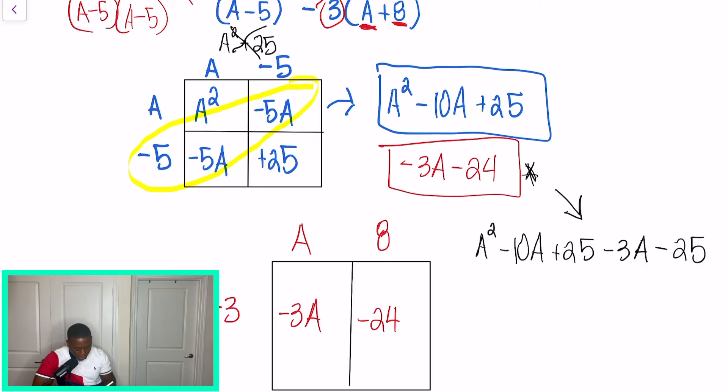So a squared, no like term, it stays the same. Now we're going to go through and we're going to add negative 10a and negative 3a. Once we do that, we'll have minus 13a, and then made a mistake. That last number should be 24. Now in our last step, we're going to look and we're going to do positive 25, and we're going to subtract 24 from it. So our final answer should be a squared minus 13a plus 1.